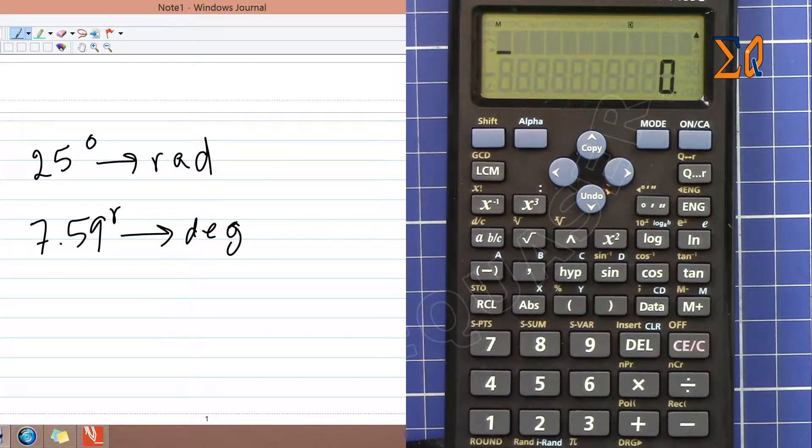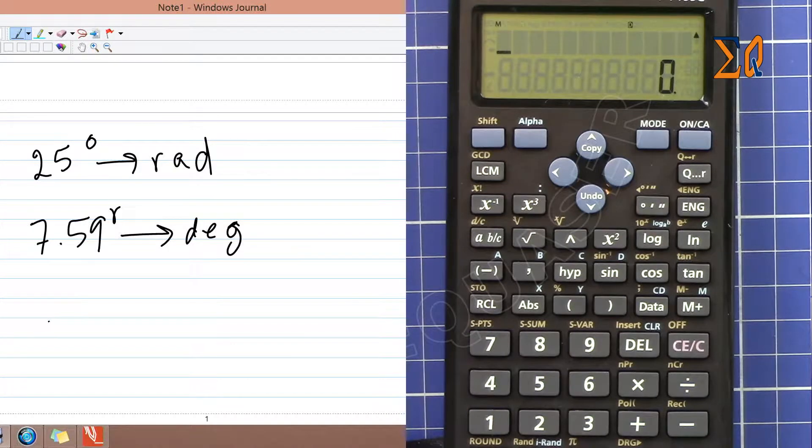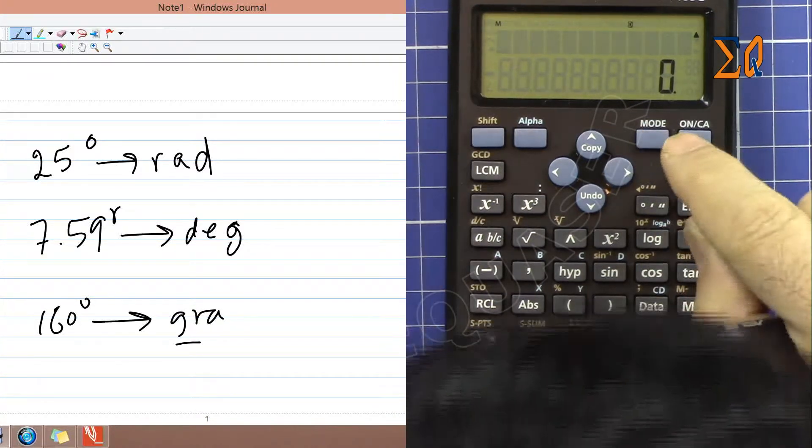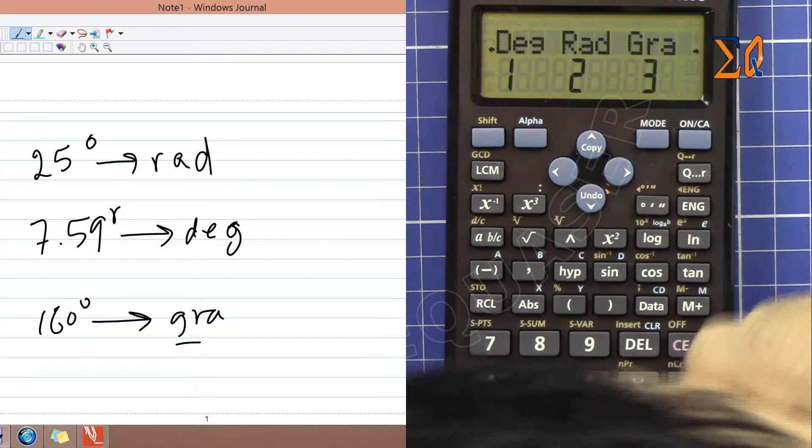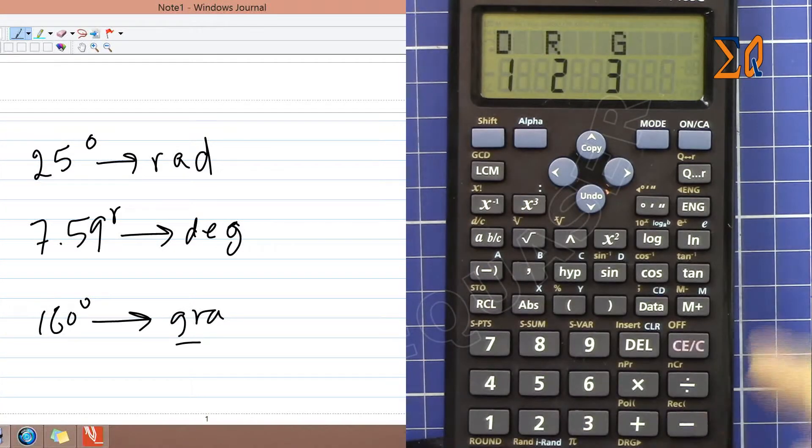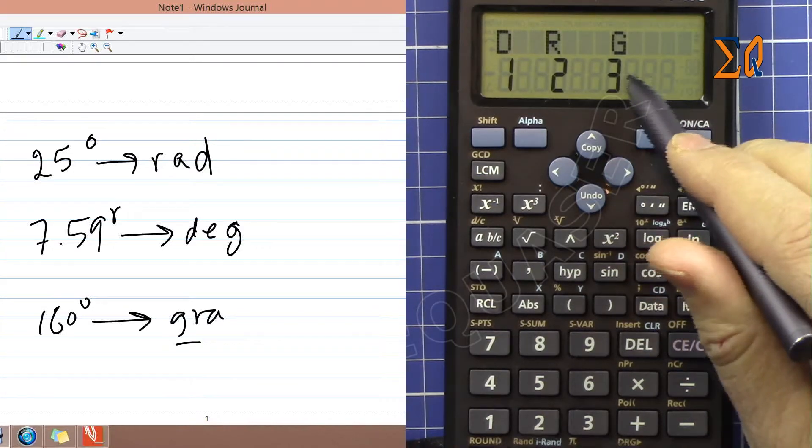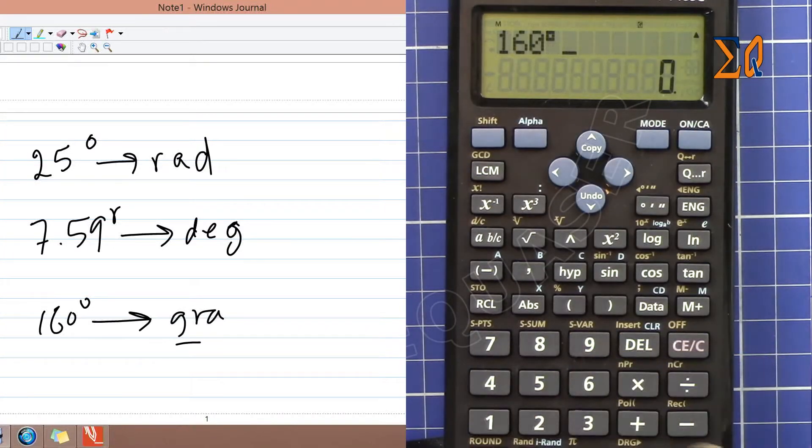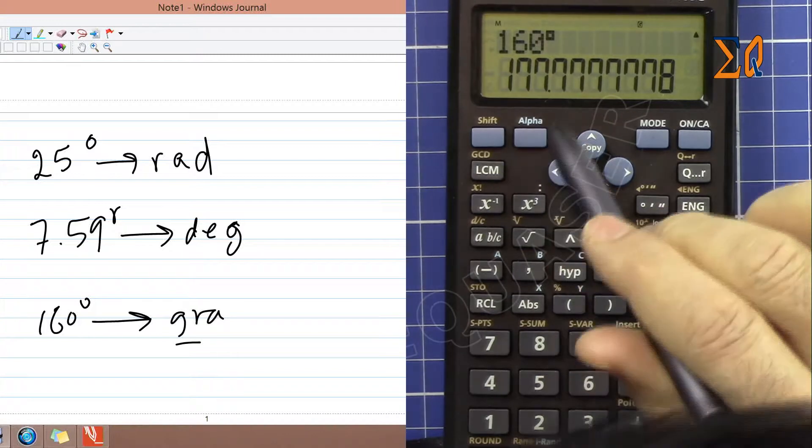The same way, if you want to convert 160 degrees to gradients, make sure the calculator is in gradient mode - that's option 3. Enter 160, press Shift-Answer, indicate the value is in degrees, and select gradient to get the value.